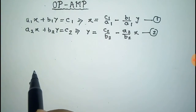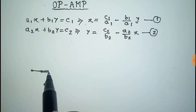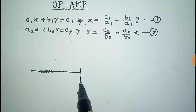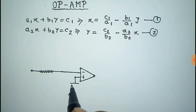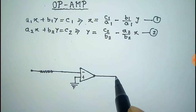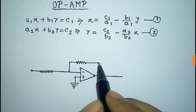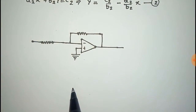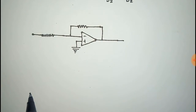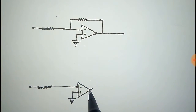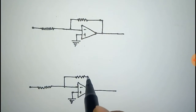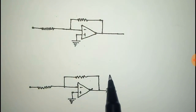Now we have to put these two equations into the circuit. For this we need two inverting op-amps. This is the first op-amp — an inverting op-amp where the positive terminal is grounded and the voltage is given at the negative terminal. This is the second op-amp. We put the first equation in the first op-amp and the second equation in the second op-amp.